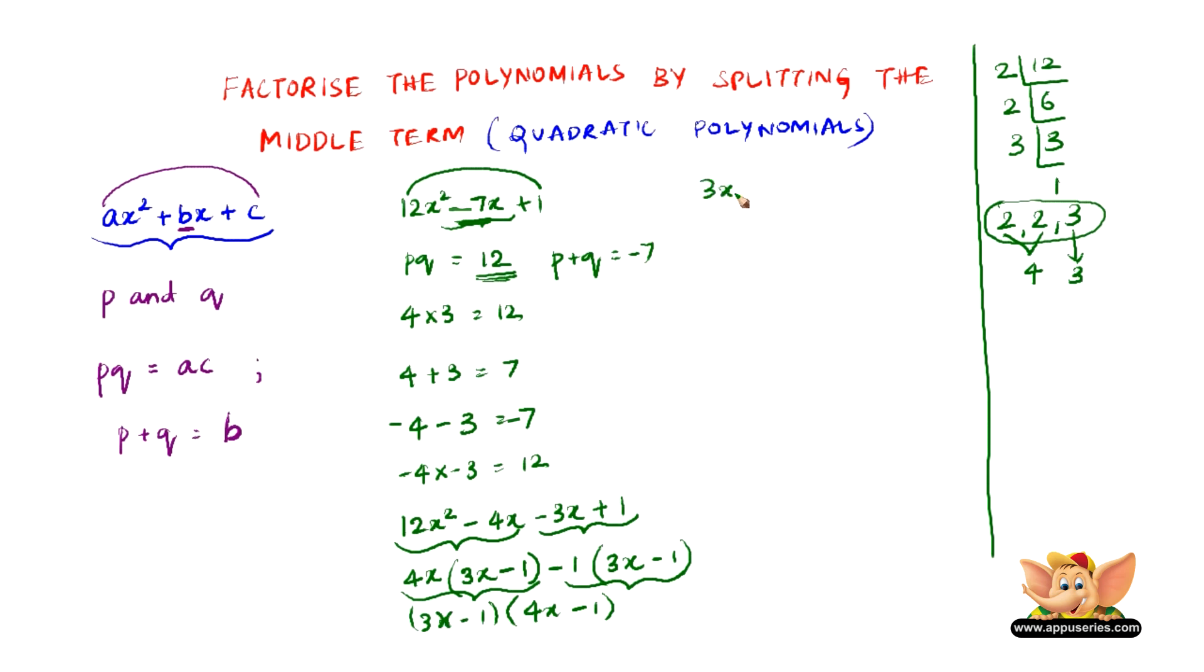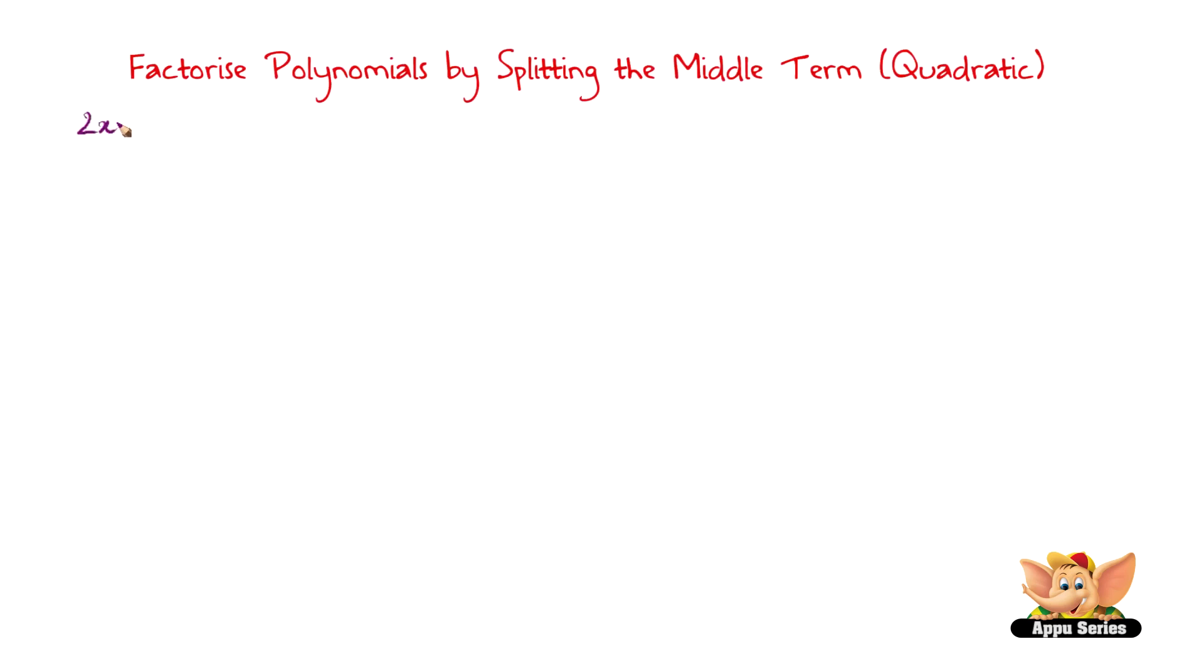So 3x minus 1 into 4x minus 1 are the factors of 12x squared minus 7x plus 1. So this is how we find the factors by splitting the middle term. Let us quickly do another problem which is 2x squared plus 7x plus 3.